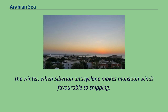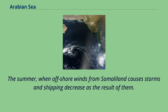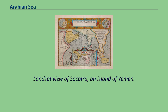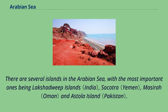In winter, the Siberian anticyclone makes monsoon winds favorable to shipping, while in summer, offshore winds from Somaliland cause storms and a decrease in shipping. There are several islands in the Arabian Sea, with the most important ones being the Lakshadweep Islands, Socotra, Masaira, and Astola Island.